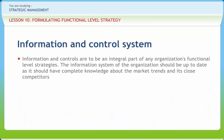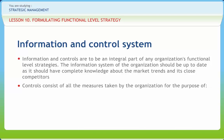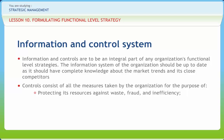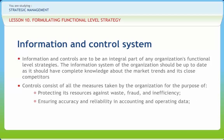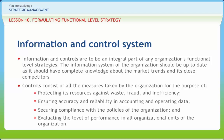Information and controls are to be an integral part of any organization's functional level strategies. The information system of the organization should be up to date with complete knowledge about market trends and close competitors. Controls consist of all the measures taken by the organization for protecting its resources against waste, fraud, and inefficiency, ensuring accuracy and reliability in accounting and operating data, securing compliance with organizational policies, and evaluating the level of performance in all organizational units.